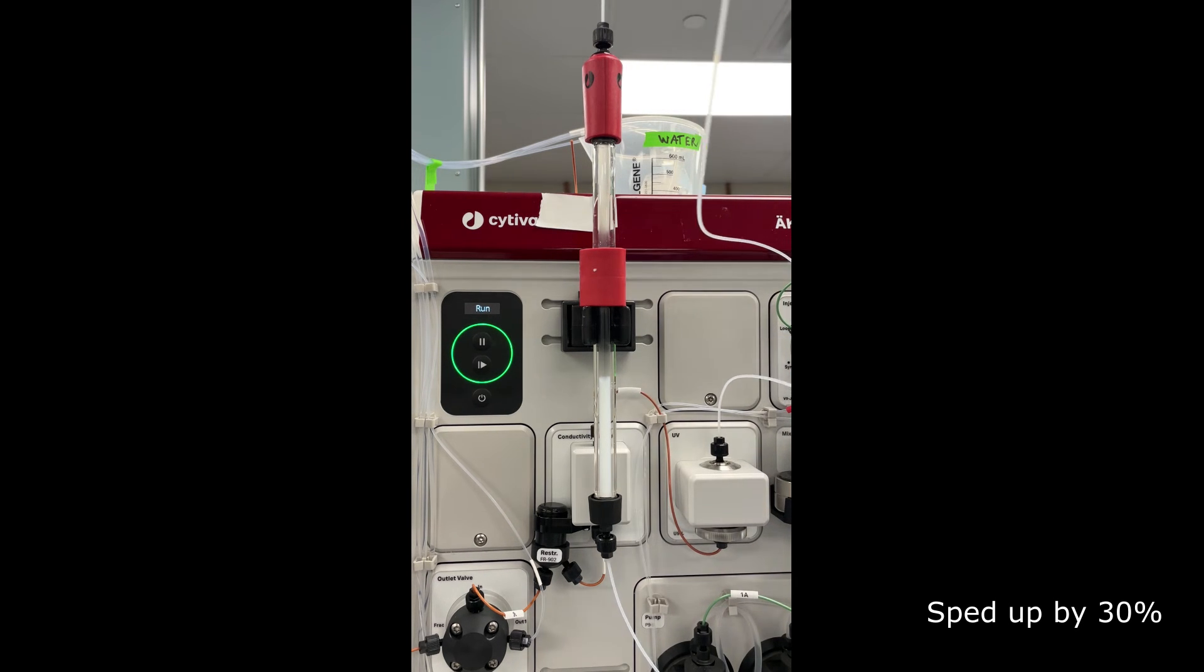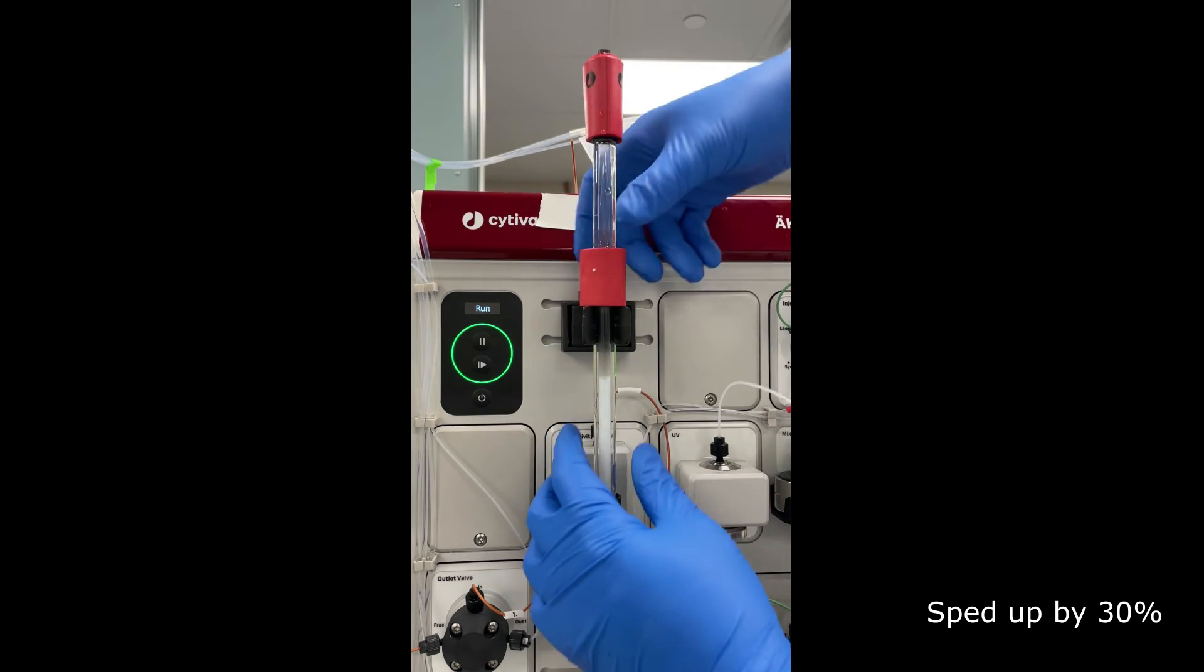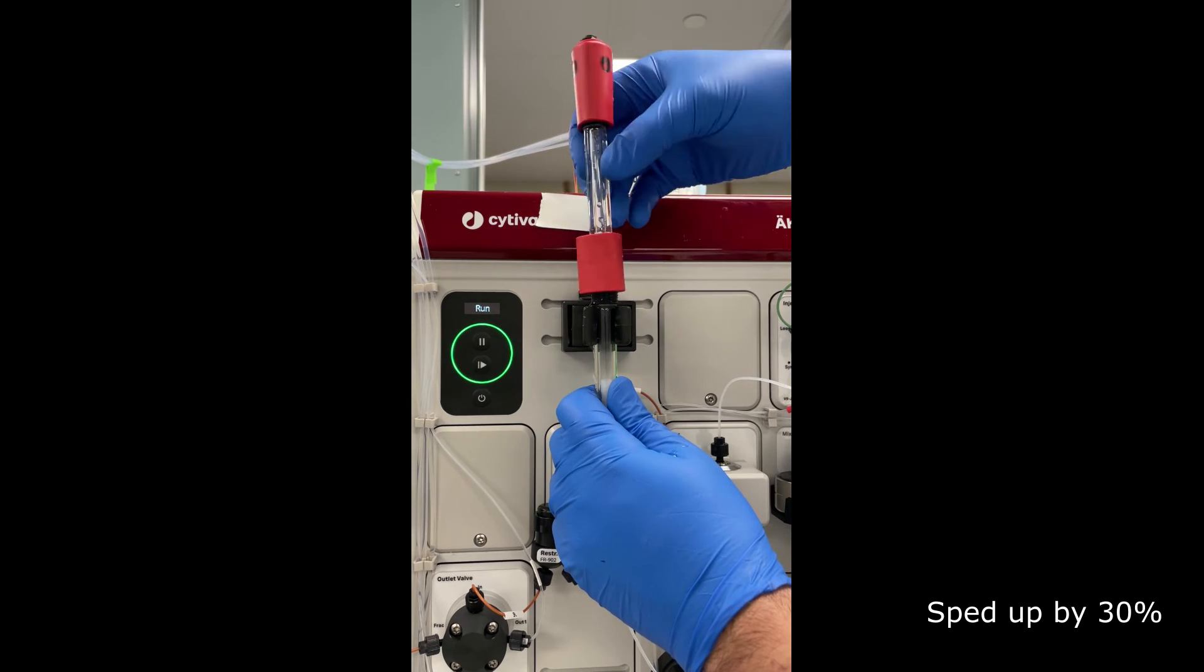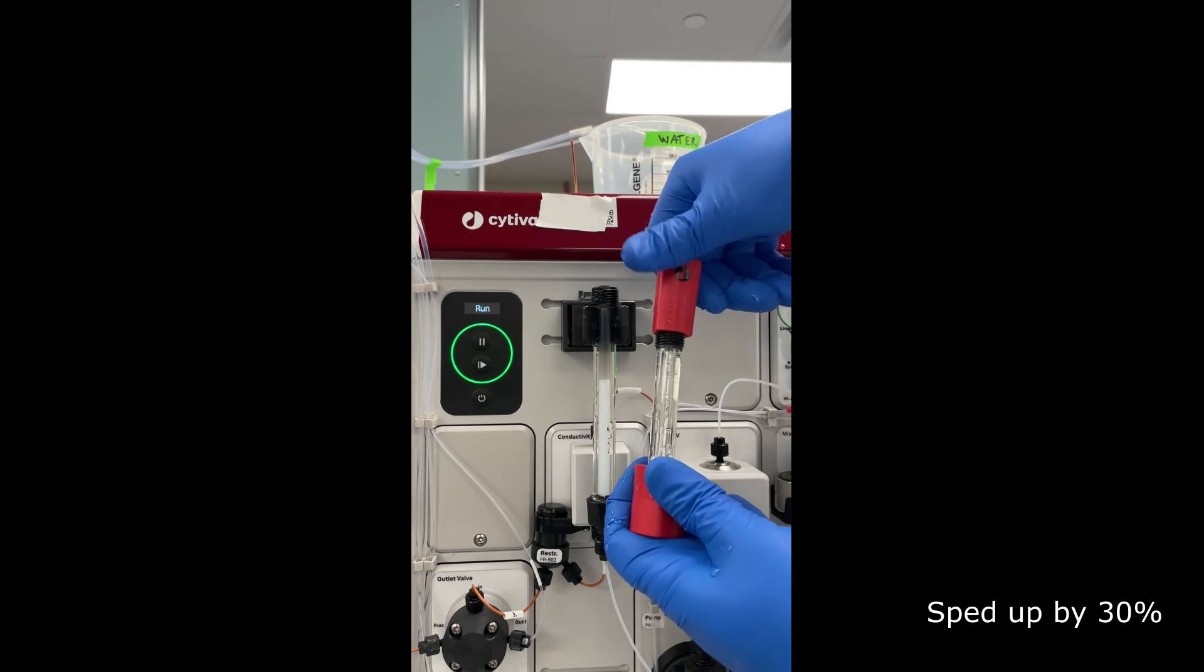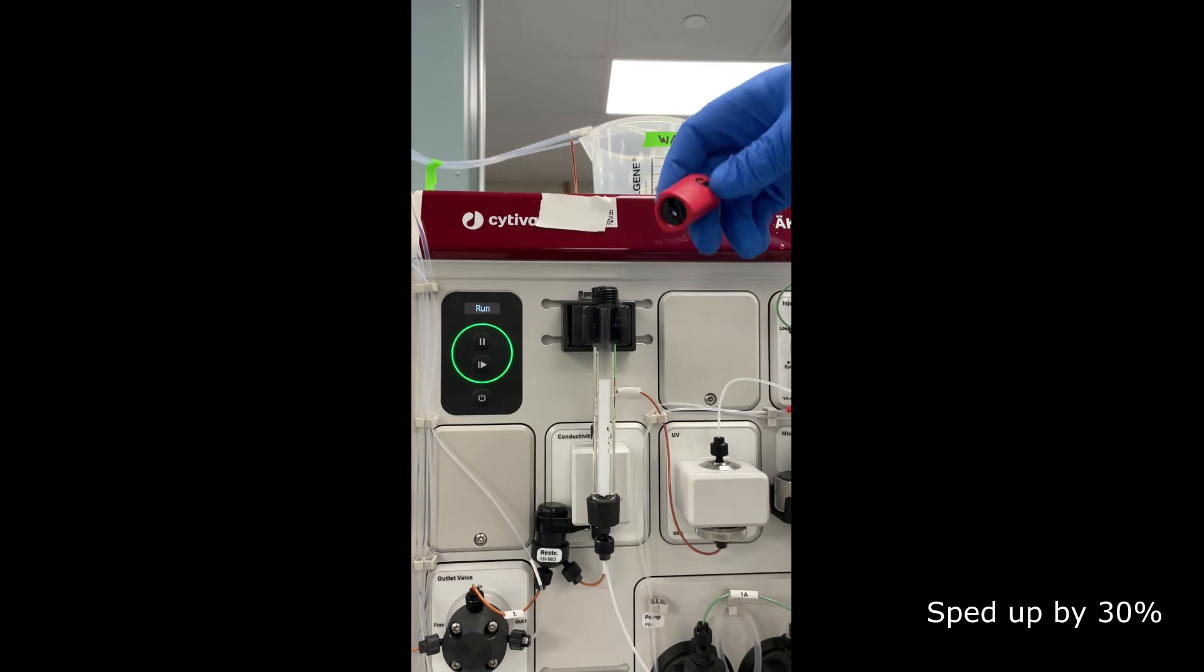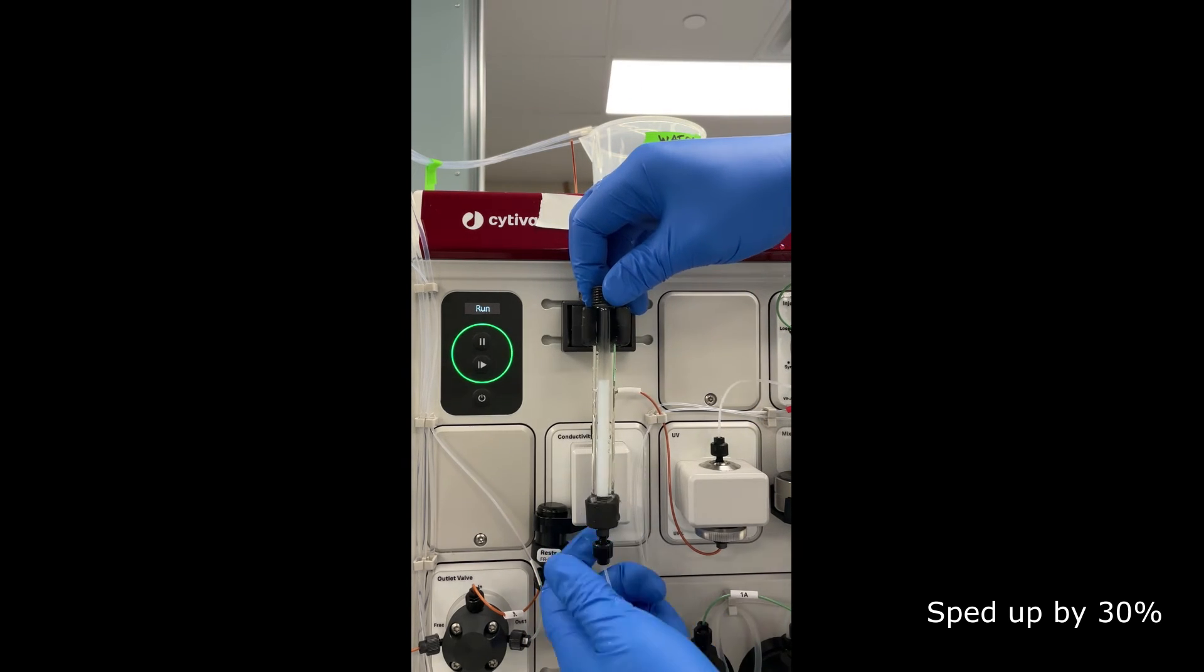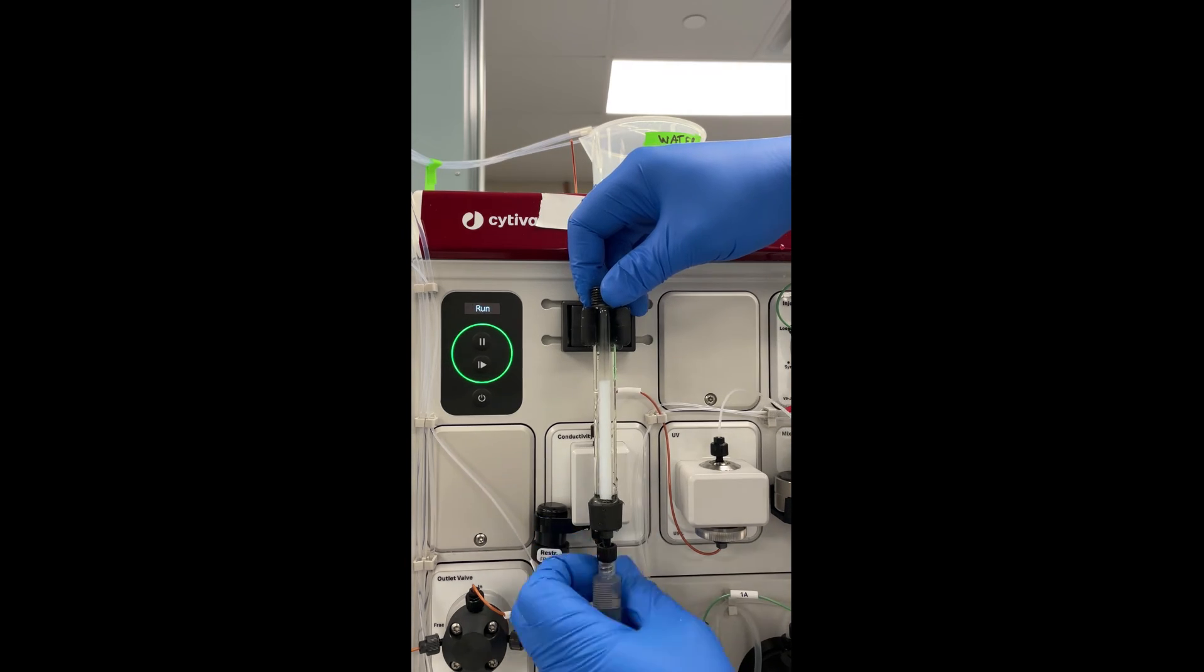When the resin bed is done settling, I'm going to check the height, which looks pretty good. Now I'm going to reconfigure the column so that I can remove the top packing adapter and packing reservoir, and also take the top adapter off. Then I'm going to put a syringe on the bottom just to secure the liquid in place, which I probably should have done first.